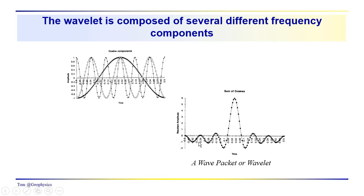All I did here was sum together several cosine components. So we can see as we do that the tails of the wavelet on either side of the central peak will get smaller and smaller as we add more frequency components.